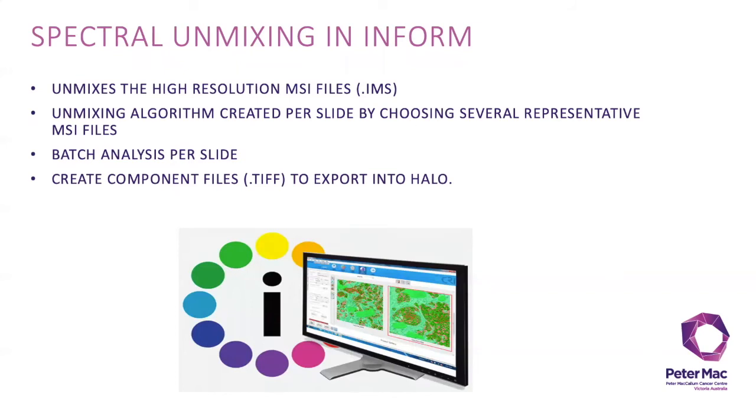An unmixing algorithm is created per slide by choosing several representative MSI files and then these undergo batch analysis to generate component TIF files which are exported into HALO for image analysis. The component TIFs are then merged in HALO to create the fully scanned tissue at times 20 magnification.